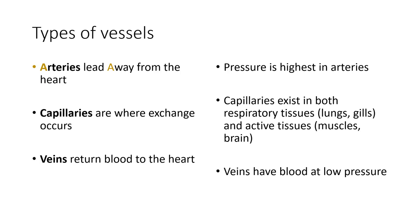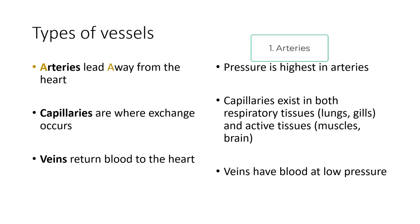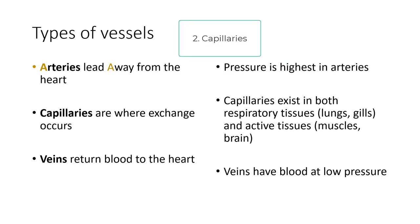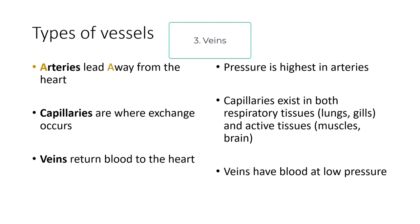Let's look at the different types of vessels present in a closed circulatory system. First, we have arteries — the A in artery means away, so arteries lead away from the heart. Capillaries are at the end of the arteries and are where gas exchange occurs, both in the lungs and in the rest of the body. Veins bring blood back to the heart. Pressure is highest in the arteries; veins have blood at very low pressure and often low oxygenation, unless they are returning blood from the lungs to the heart.